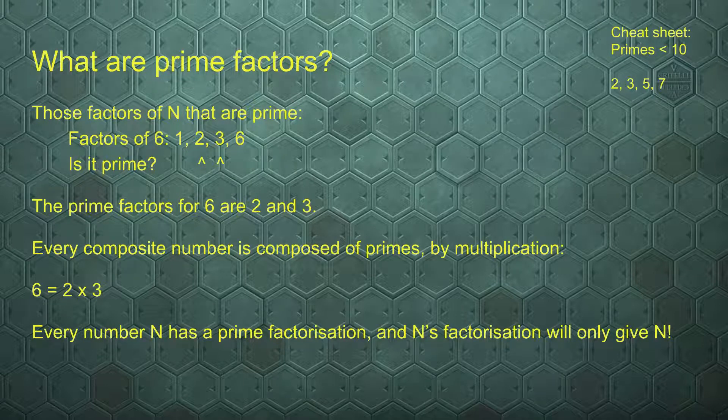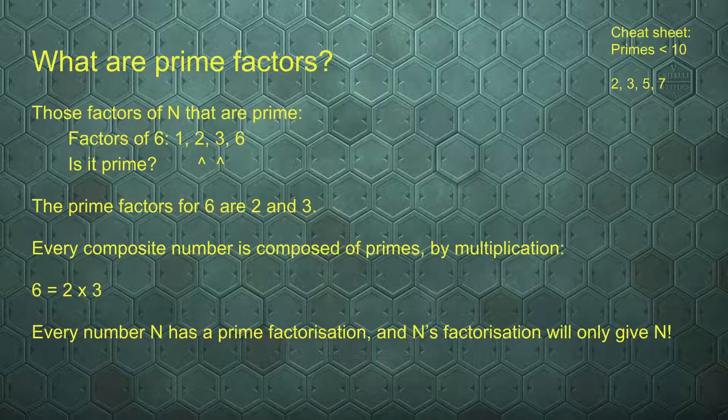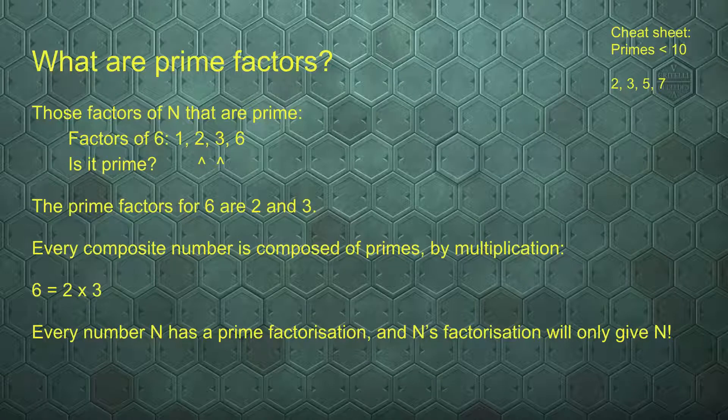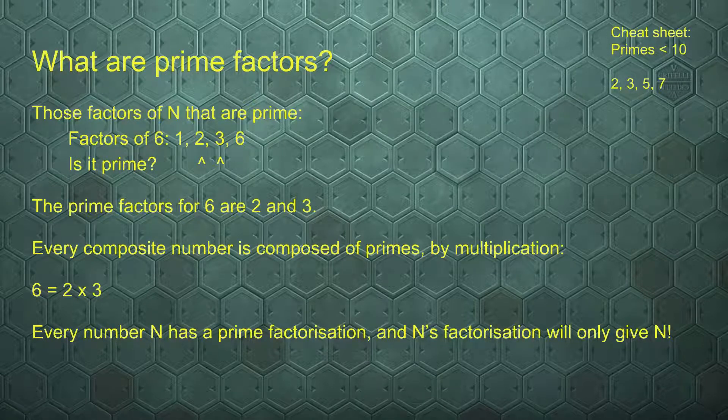Every number has a prime factorization, and that specific prime factorization will only lead back to that number. There is no other way in which you can multiply primes to get 6, and there is no other number that you will get by multiplying 2 and 3.